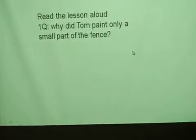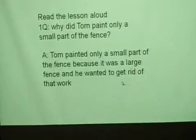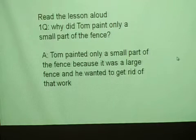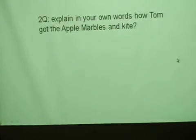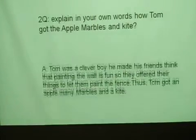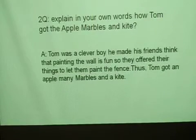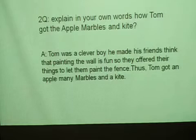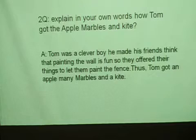Read the lesson aloud. Why did Tom paint only a small part of the fence? Tom painted only a small part of the fence because it was a large fence and he wanted to get rid of that work. Explain in your own words how Tom got the apple, marble, and kite. Tom was a clever boy. He made his friends think that painting the wall is fun, so they offered their things to let them paint the fence. Thus, Tom got an apple, many marbles, and a kite.